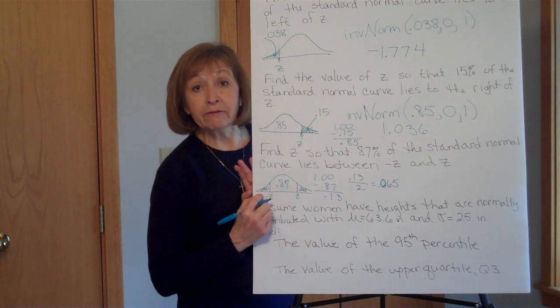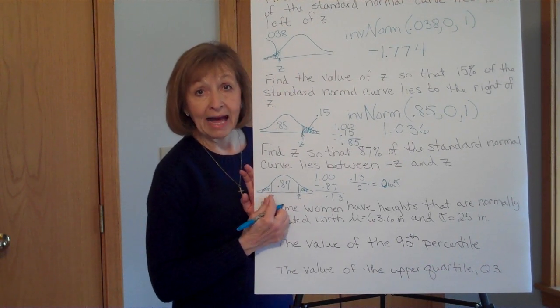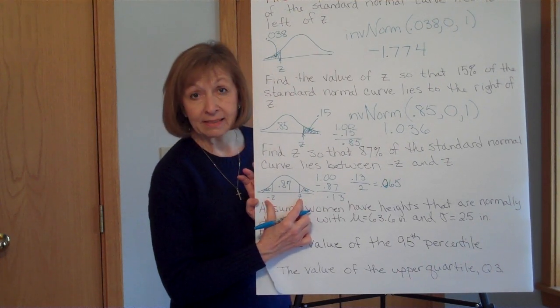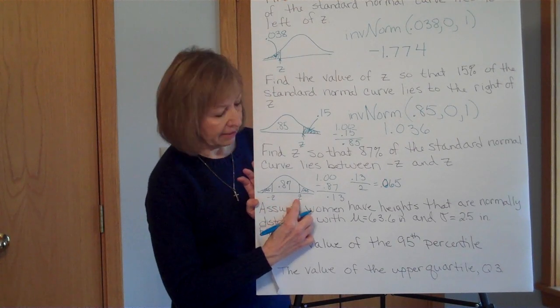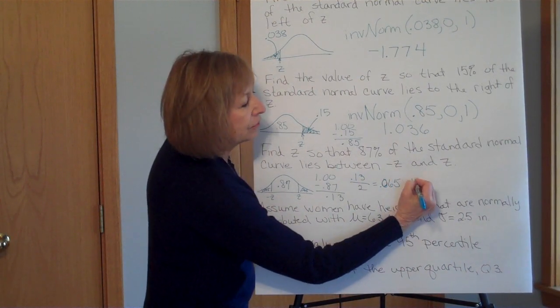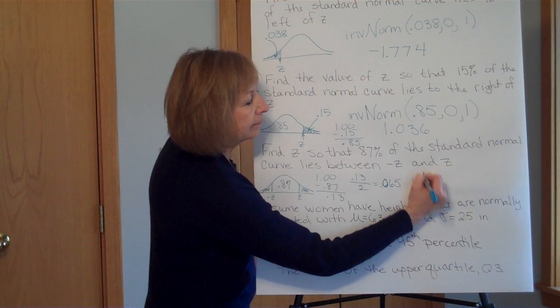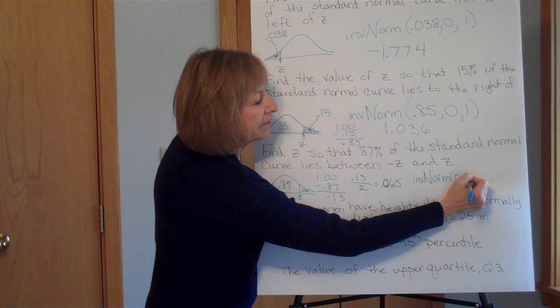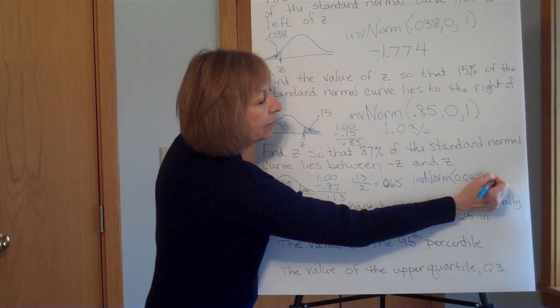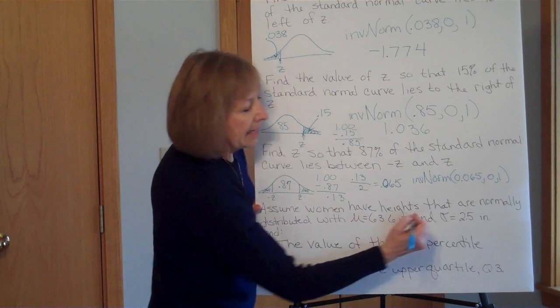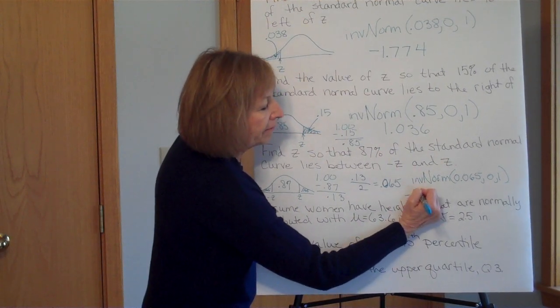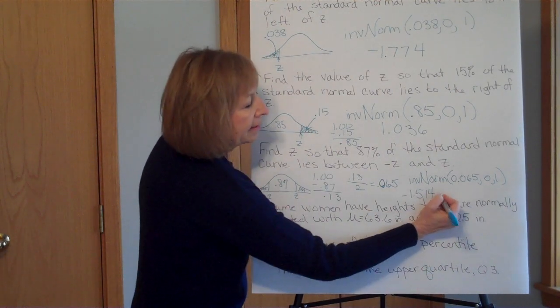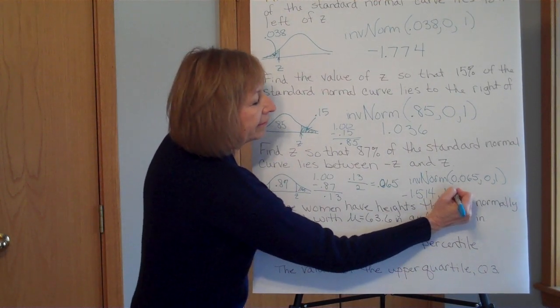If I do the inverse norm with 0.065, I will get this z-score. And then, because it wants it centered, I could just do the positive of that number for the other one. So inverse norm of 0.065 comma 0 comma 1, and we get a negative 1.514, and then the other value is the positive 1.514.